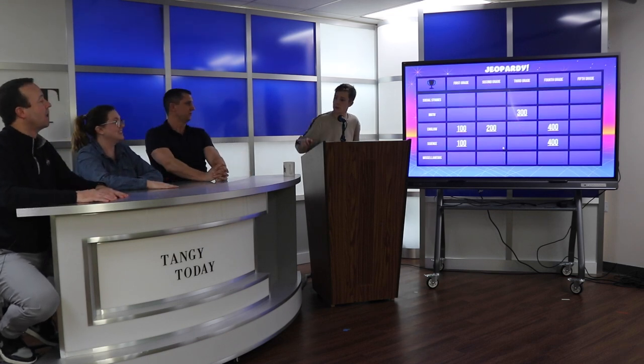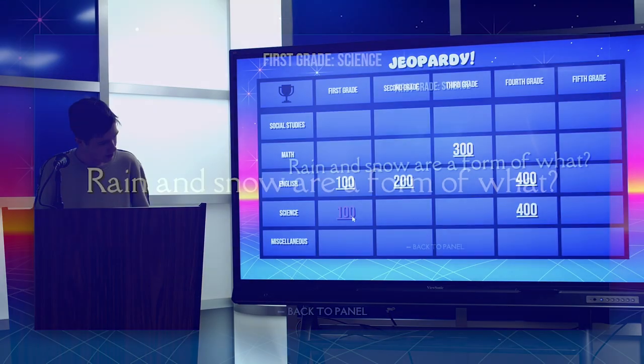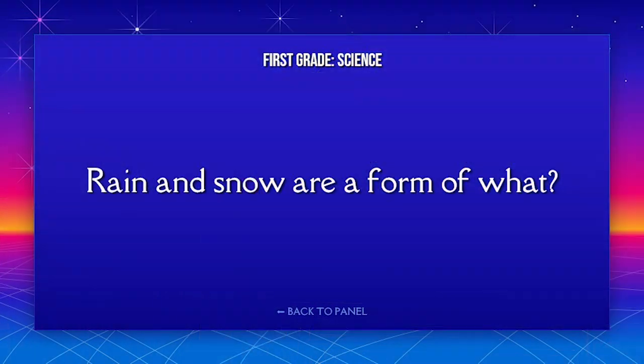Now we'll go back down to you. Let's do science for 100. Rain and snow are a form of what? Precipitation. That is correct.